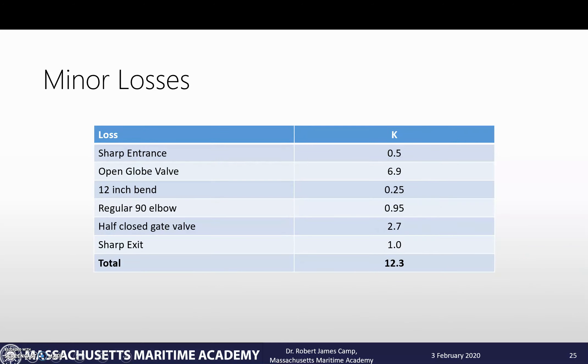Just to sum up what do we have: sharp entrance of 0.5, open globe of 6.9, bend radius of 0.25, regular 90 degree elbow of 0.95, half closed gate valve of 2.7, sharp exit of 1.0. That gives us a total of 12.3 for the minor losses.